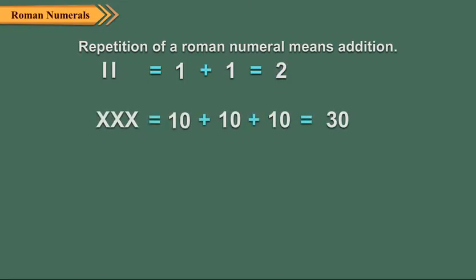In XXX, the symbol has been repeated thrice. So, its value becomes 10 plus 10 plus 10 which is equal to 30.